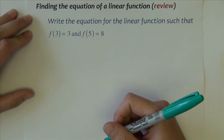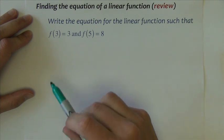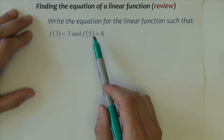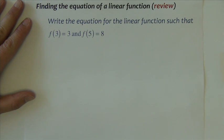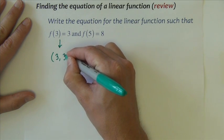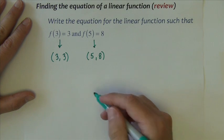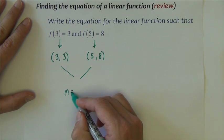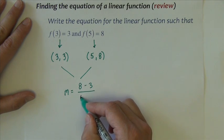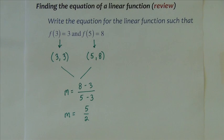In this first example, we do a review of a linear function problem presented a bit differently. The directions say: write the equation for the linear function such that f of 3 equals 3 and f of 5 equals 8. Function notation is being used here, and we interpret it as ordered pairs — f of 3 equals 3 means when x is 3, y is 3; f of 5 equals 8 means when x is 5, y is 8. With two points we can find the slope, which is 5 halves.